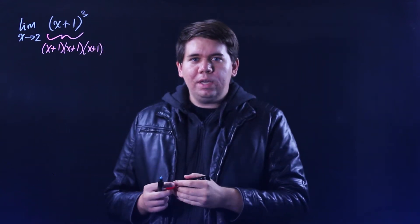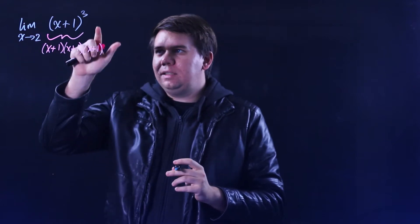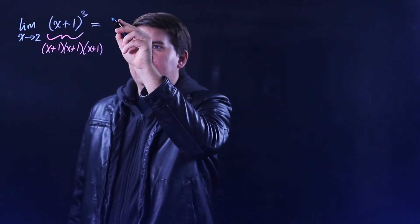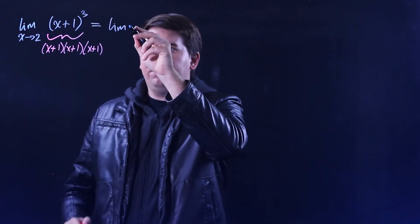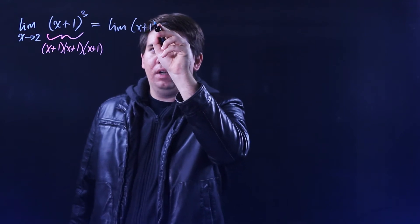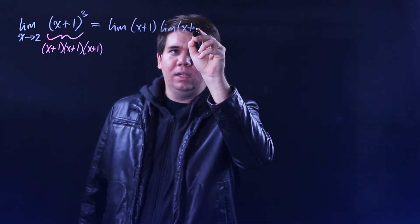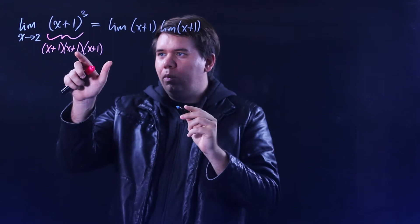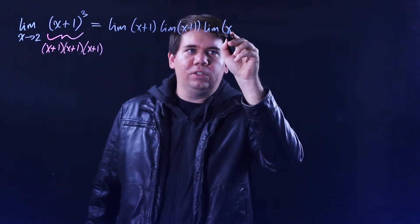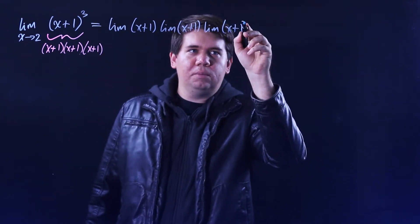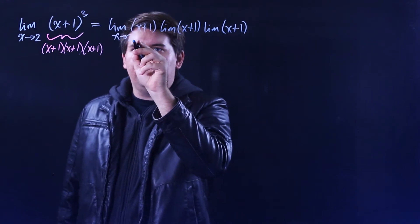So we can use our multiplication law, which says this is secretly just the same thing as the limit of the first function, (x+1), times the limit of the next function, (x+1), times the limit of the next function, (x+1), all as x goes to 2.